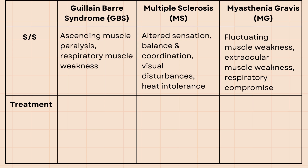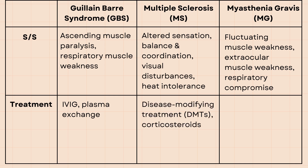These symptoms are some of the more characteristic symptoms of each of the conditions. For more details, refer to my videos on each topic. The mainstay of treatment for GBS is IVIG and plasma exchange. For multiple sclerosis, disease-modifying treatments are the first-line treatment and corticosteroids are used for relapse.